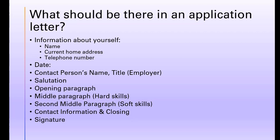What should be there in an application letter? 1. Information about yourself — your name, current home address, and telephone number. 2. The date when you write the application letter. 3. Contact person's name, title, and employer. 4. Salutation. 5. Opening paragraph. 6. Middle paragraph or hard skills. 7. Second middle paragraph or soft skills. 8. Contact information and closing. And the last is the signature.